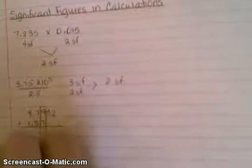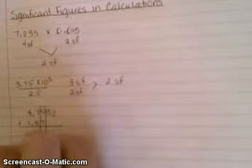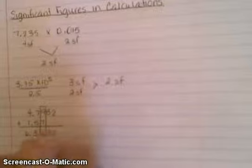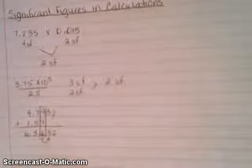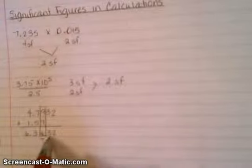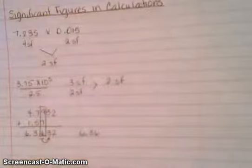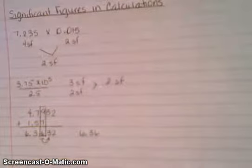When I add these together I get 6.3632. Now I need to know if I need to leave the number the same or if I need to round up. The number to the right of the six is a three, so that means we're going to leave the number the same. Your final answer would be 6.36. The same rules apply when you do subtraction.